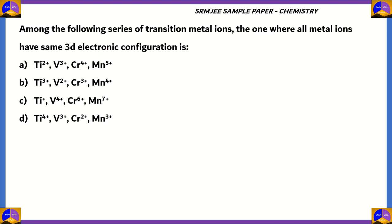Next question. This is from chemistry, by the way. Among the following series of transition metal ions, the one where all metal ions have same 3d electronic configuration is. So we have the oxidation states of four transition elements: titanium, vanadium, chromium, and manganese. So the first thing we need to do is to find out the electronic configuration of these four elements.